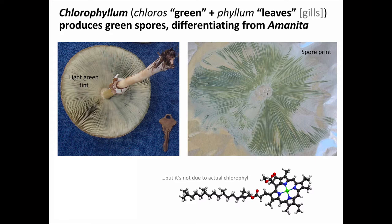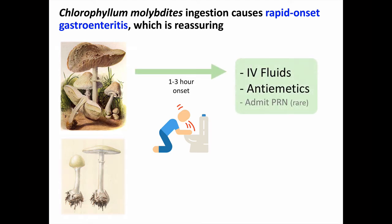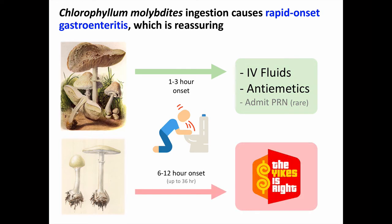The green color is not from actual chlorophyll, which is found in plants and not in fungi. Chlorophyllum molybdites ingestion causes the rapid onset of abdominal pain, nausea, vomiting, and occasionally diarrhea. If the onset of GI symptoms is within just a few hours, that is reassuring — it is highly unlikely the patient ate a very dangerous mushroom. These patients are treated symptomatically with IV fluids and antiemetics. The need for admission is rare. However, if there is a delay of many hours before onset of GI symptoms, you really have to start considering a hepatotoxic mushroom instead.